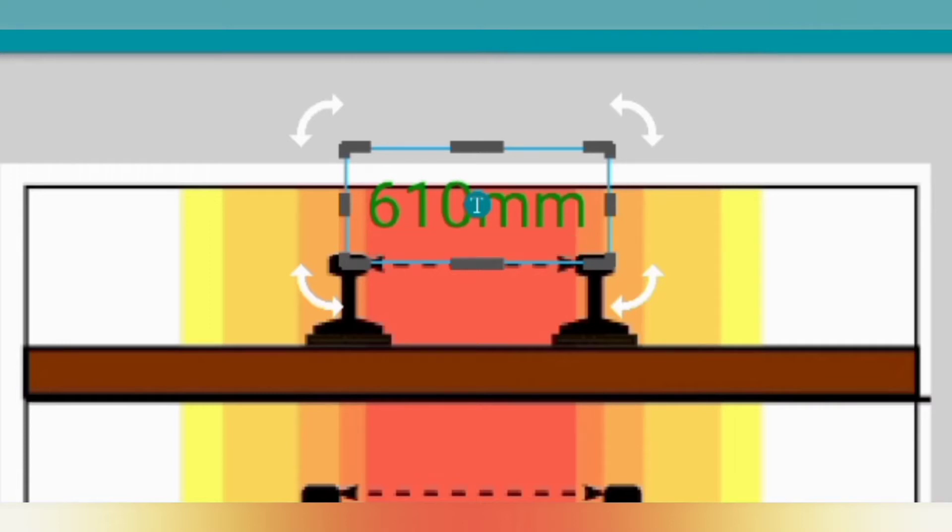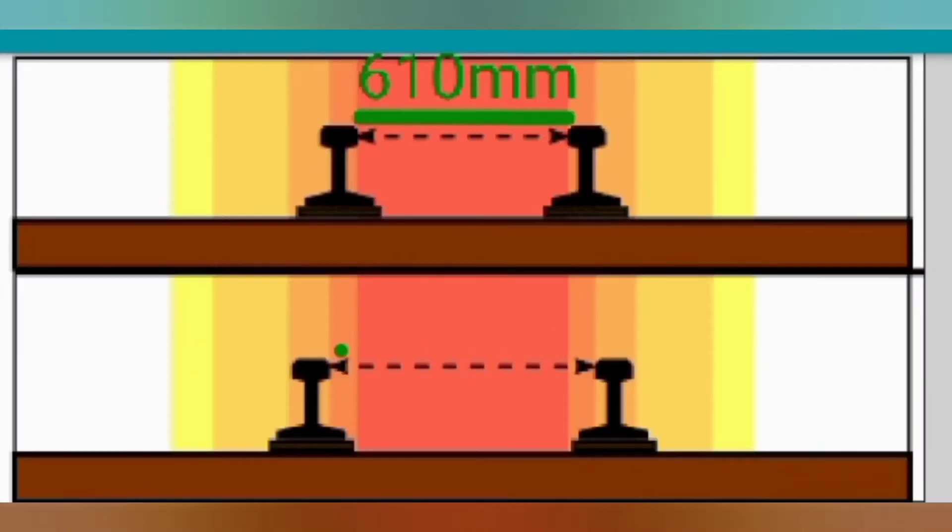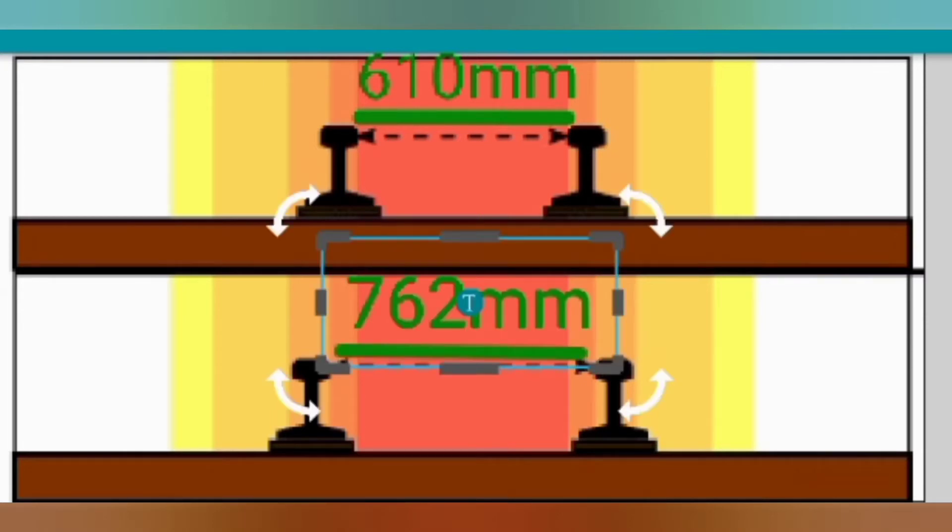A clear distance between the running faces of two rails in a track is 610 mm, that is called narrow gauge. And the clear distance between two running faces of rails in a track is 762 mm, that is also called narrow gauge.